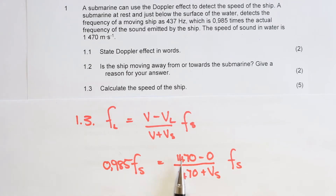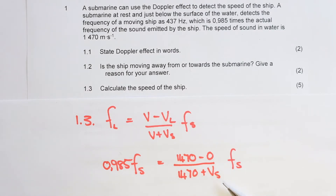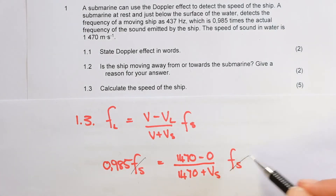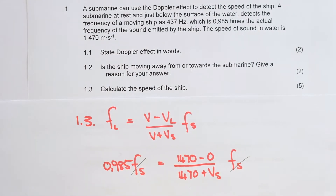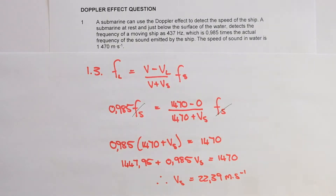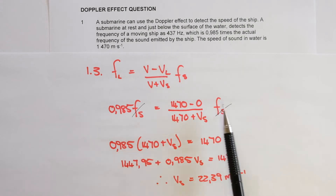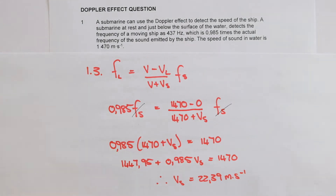This is the speed of sound in water. Our submarine is not moving, and they ask you to calculate the speed of the ship. We cancel out the frequency of the source on either side, then multiply out the bracket and solve for V subscript S. The answer is 22.39 meters per second.